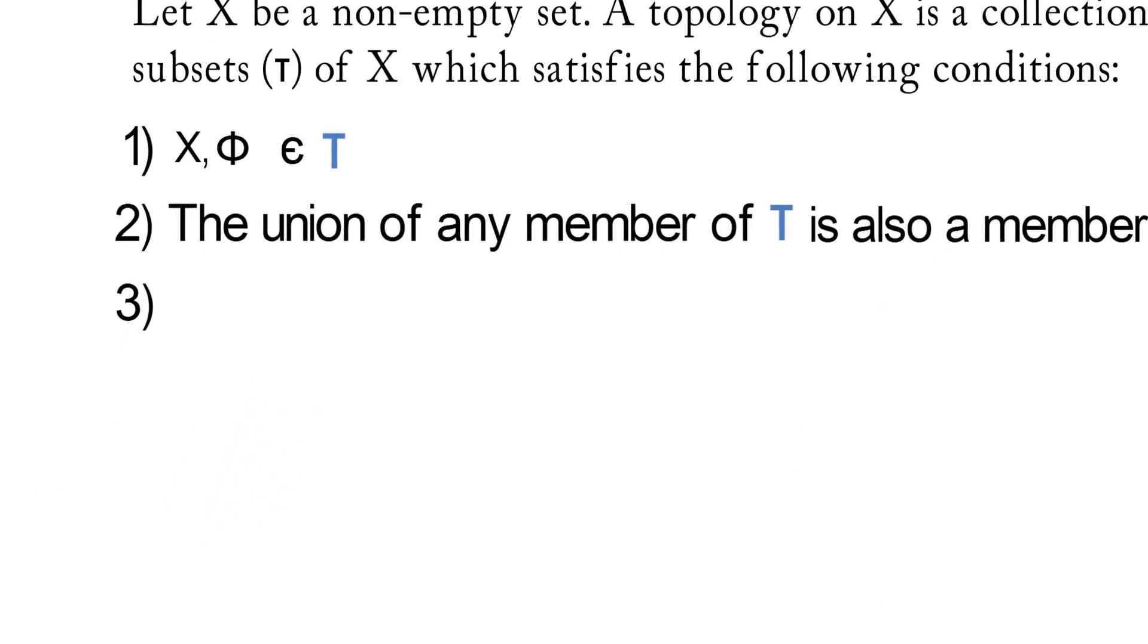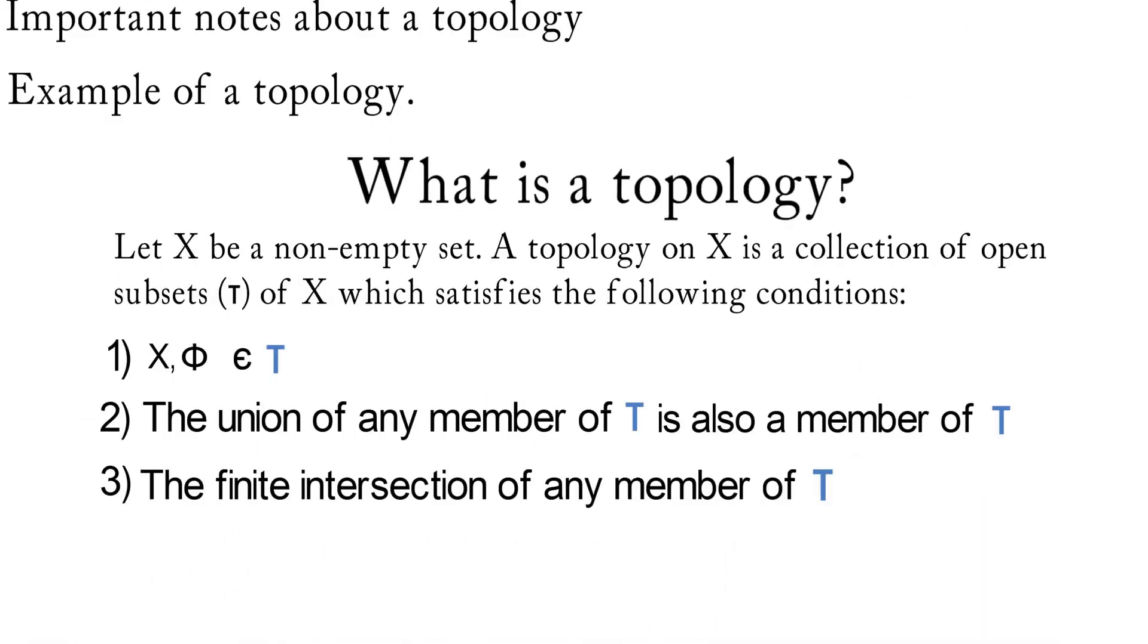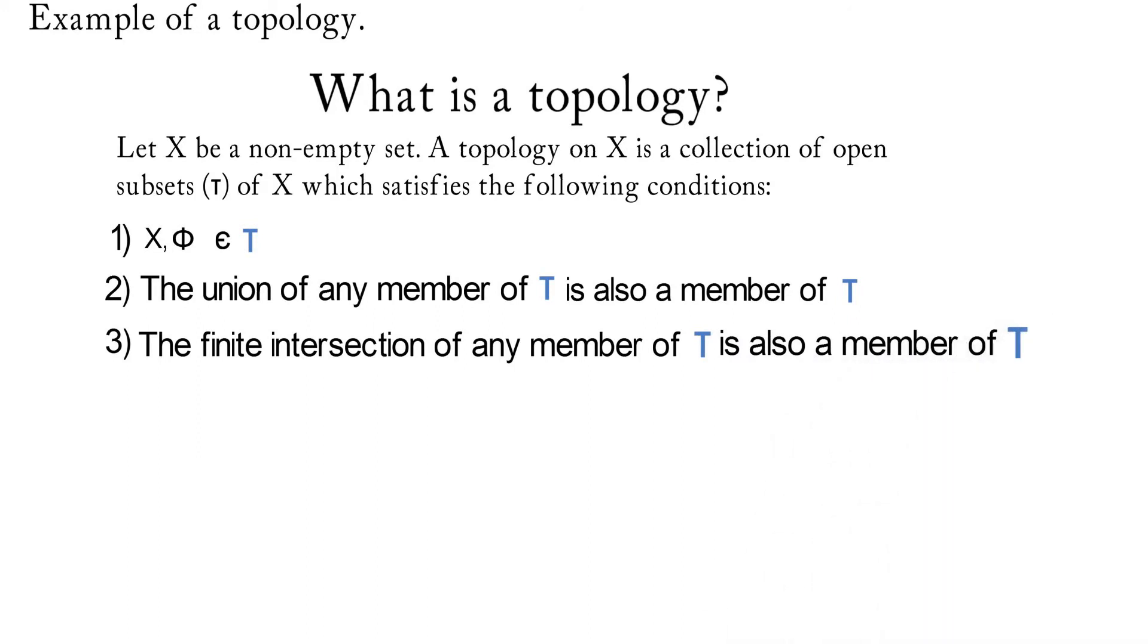Condition 3 states that the finite intersection of any member of tau is also a member of tau. So if the three conditions hold, then we say we have a topology on X.